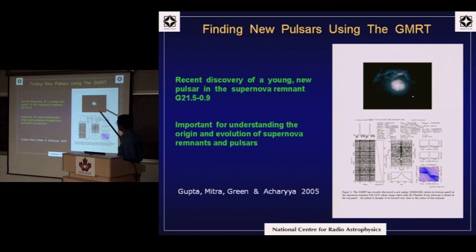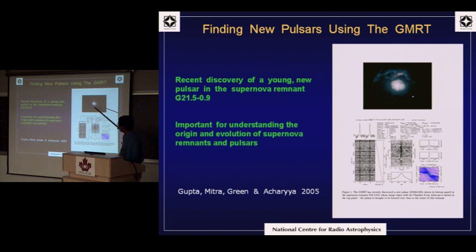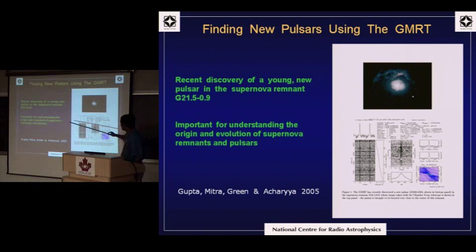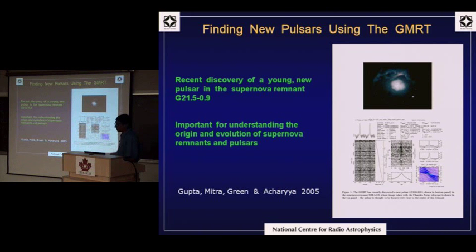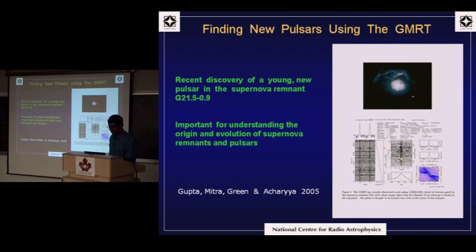Another interesting pulsar discovered with the GMRT is the opposite kind - a very young pulsar in supernova remnant G21.5-0.9 seen in X-rays. We were doing a search of supernova remnants where pulsars had not been found, and this was the first one we saw - a 60 millisecond period pulsar. Follow-up observations show it has a very high energy loss rate, the highest after the Crab pulsar in the galaxy.